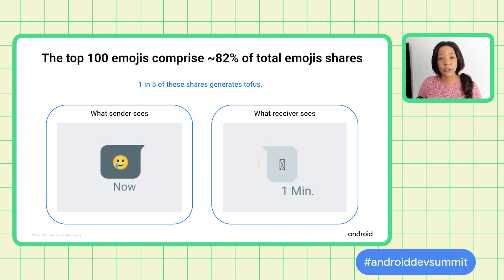For example, on screen you can see that the sender wanted to send a smiley face with a tear, and instead the recipient got a box with an X in the middle — also known as the tofu — and the intent of the message is completely lost on the recipient.